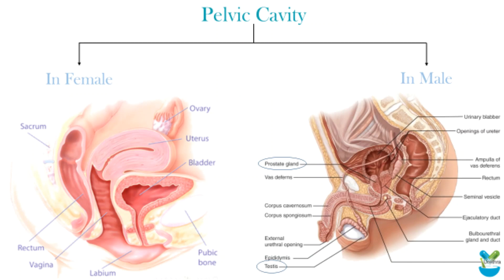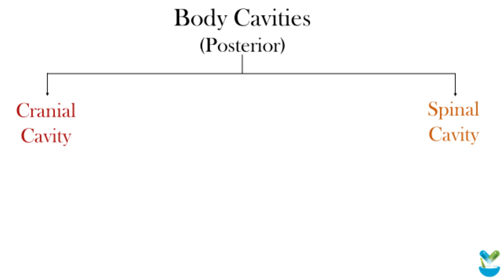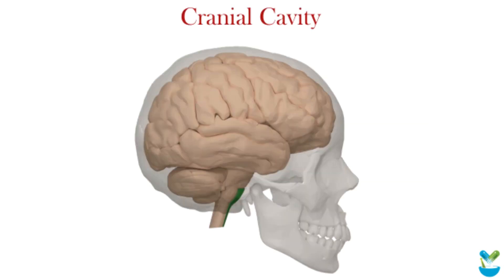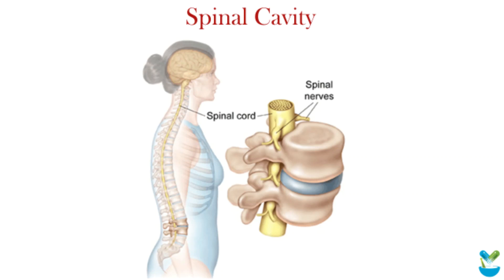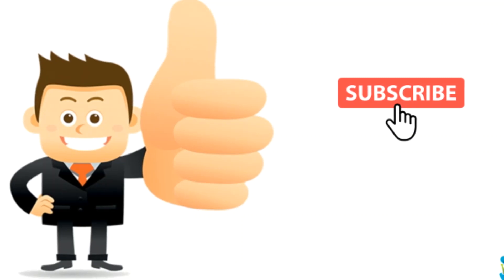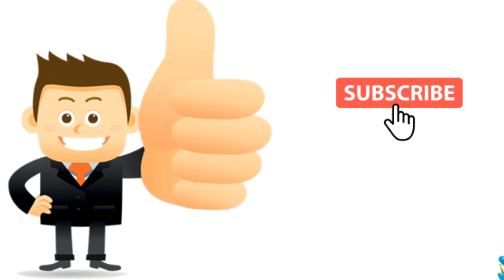On the posterior or dorsal side of the body, there is the cranial cavity and the spinal cavity. The cranial cavity or cranium, which is the part of the skull, encloses the human brain, while the spinal cavity has the spinal cord surrounded by the vertebral column.